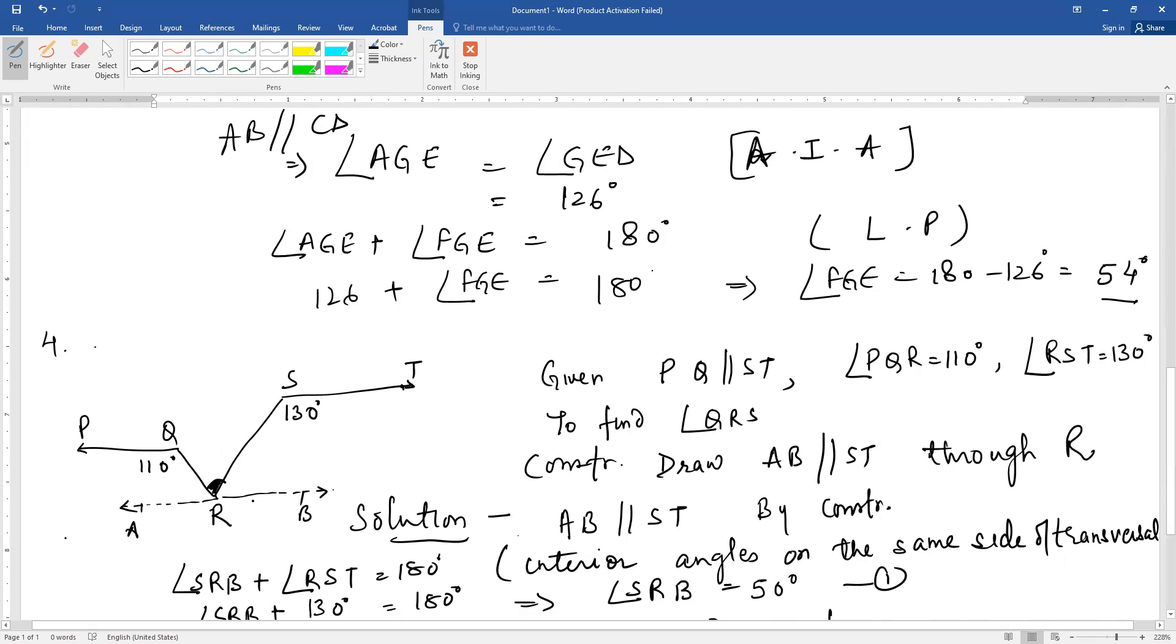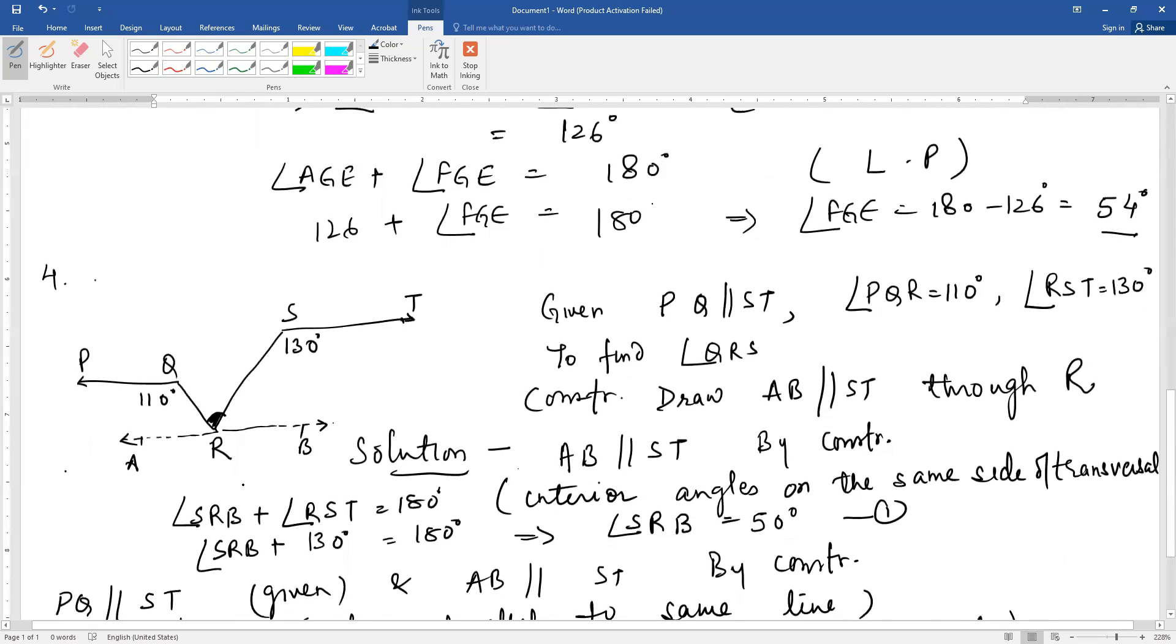For this construction, we draw a line AB through point R parallel to ST. Now if ST and AB are parallel, then angle RST and angle SRB are interior angles on the same side of the transversal, so their sum should be 180 degrees.